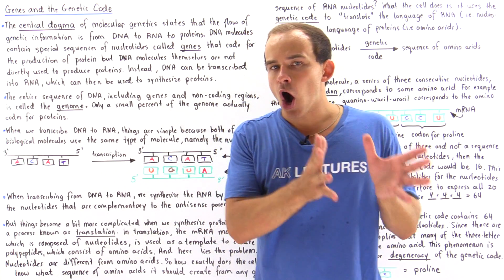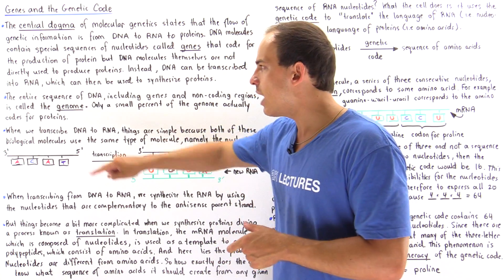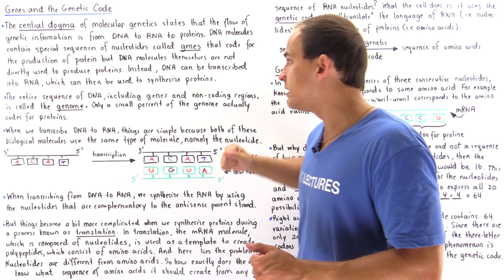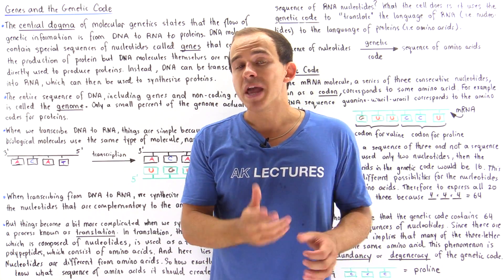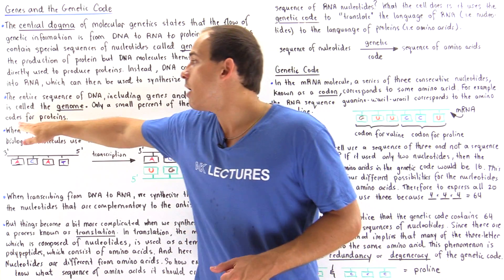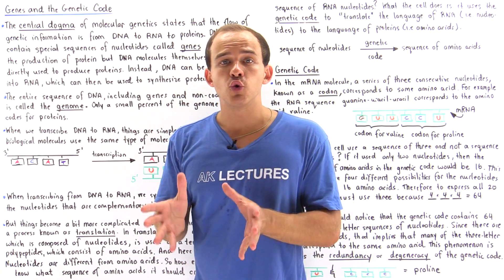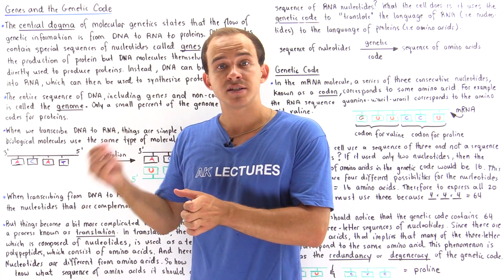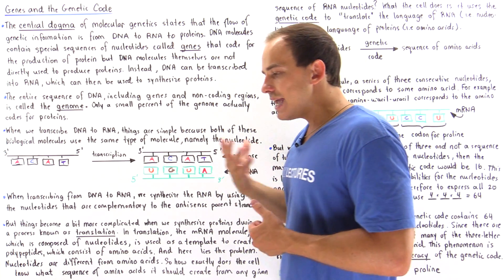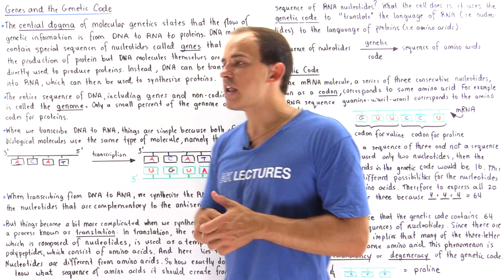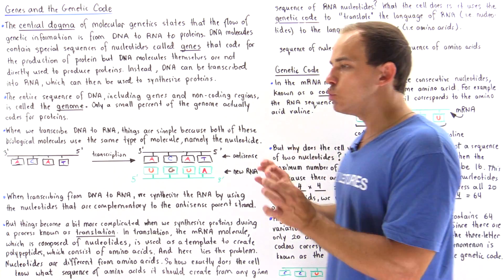It's not the DNA, but the RNA molecule that is directly involved in the process of translation and protein synthesis. The entire sequence of DNA of any organism, including the genes as well as the non-coding regions, is known as the genome. Only a small percentage of the genome actually consists of coding regions — the regions of nucleotides that code for proteins.